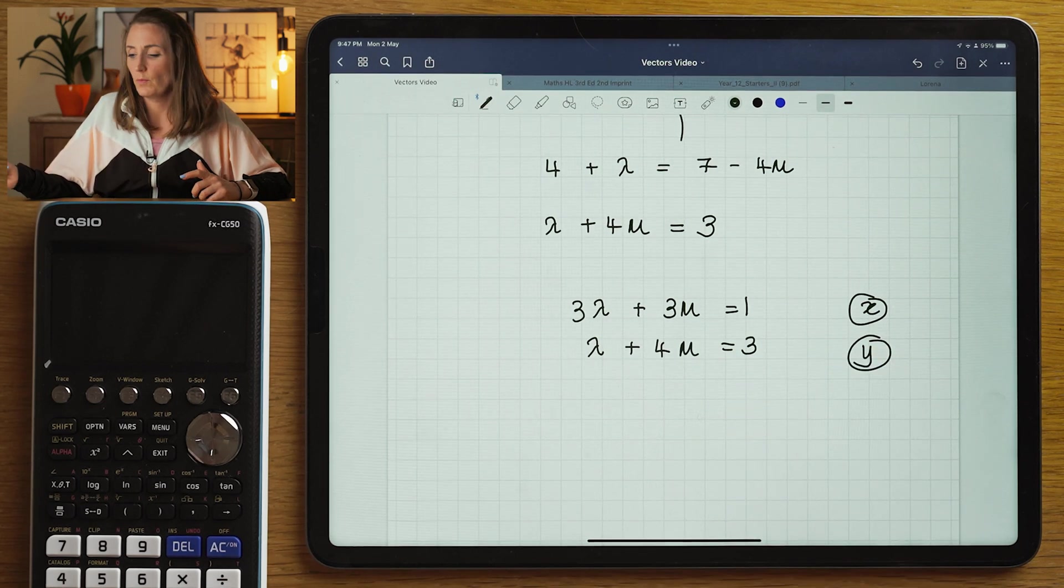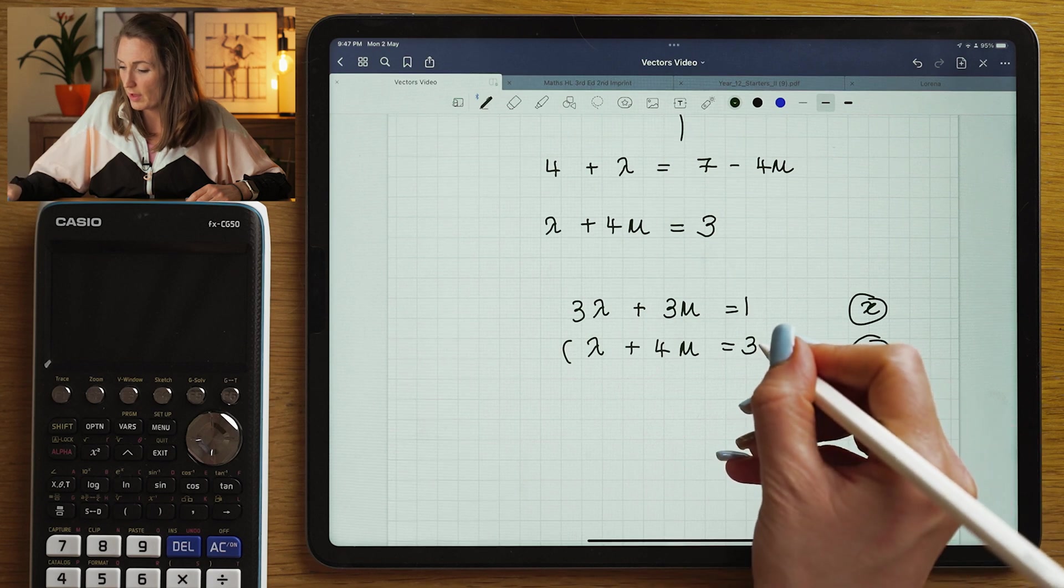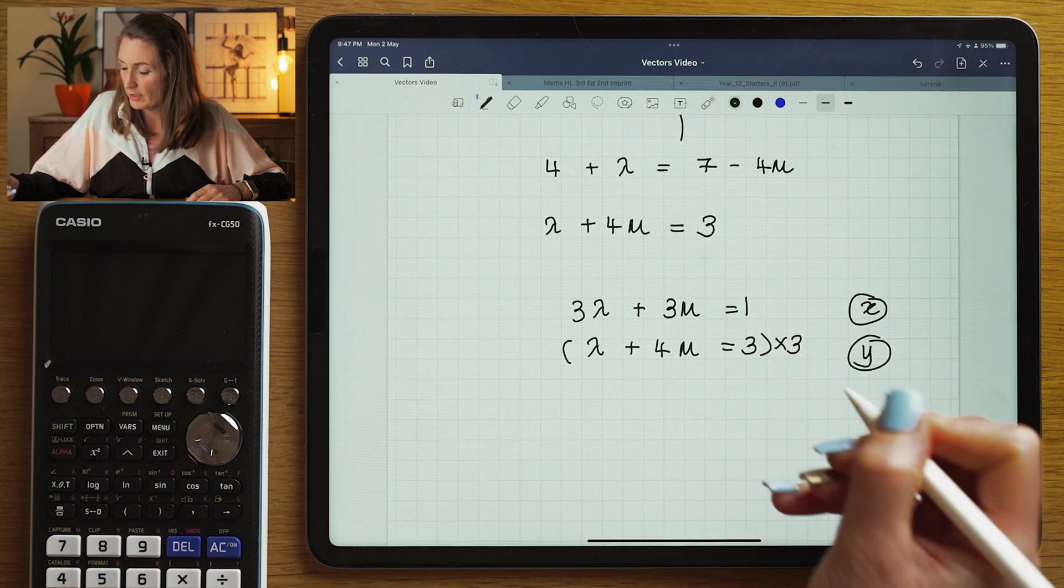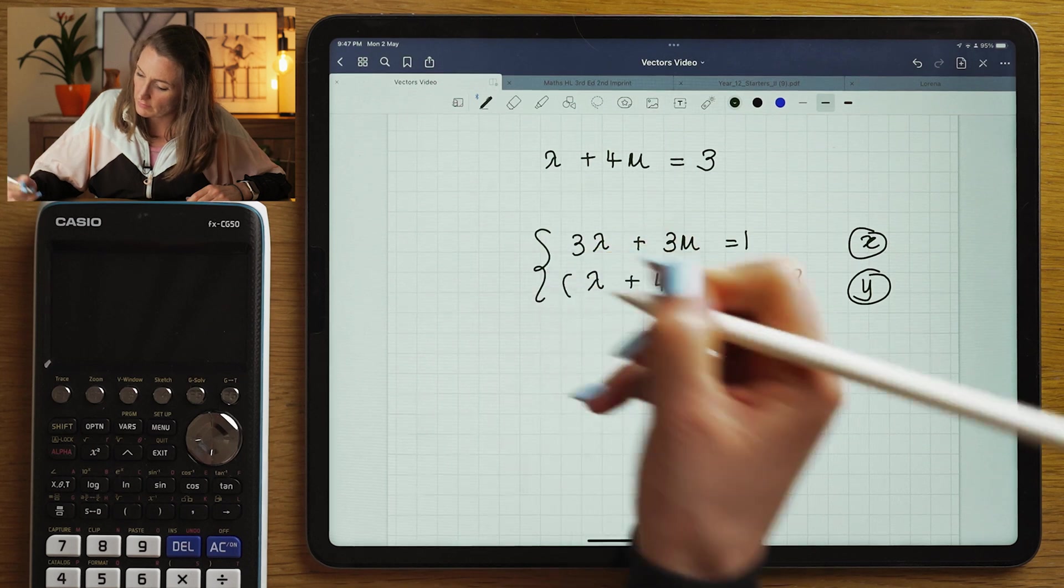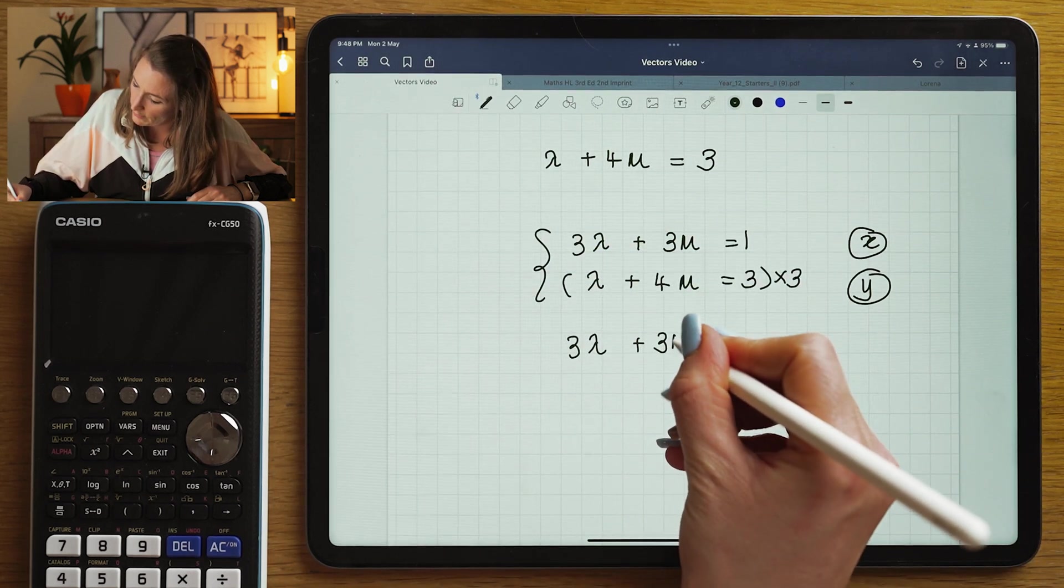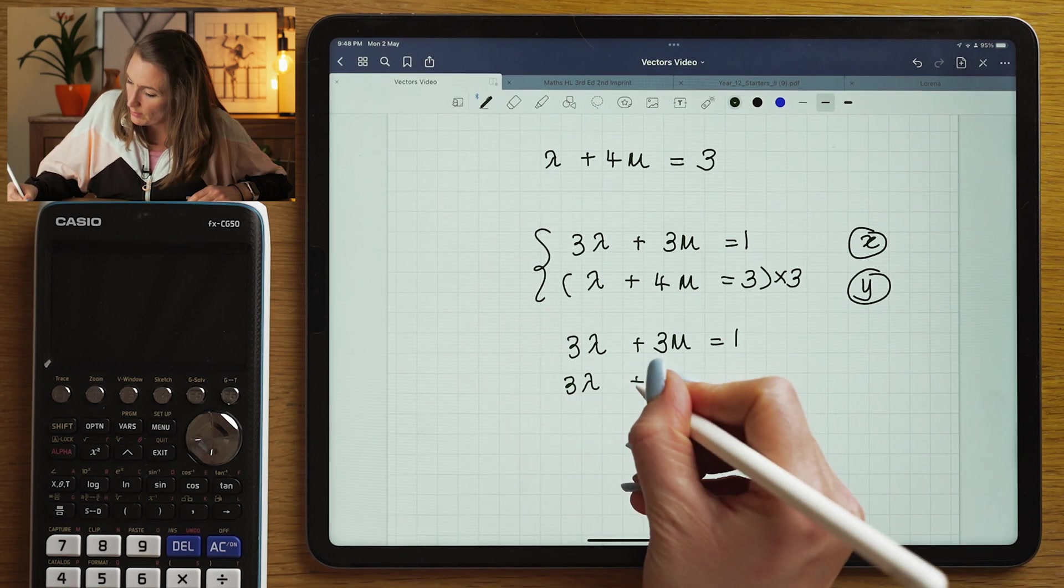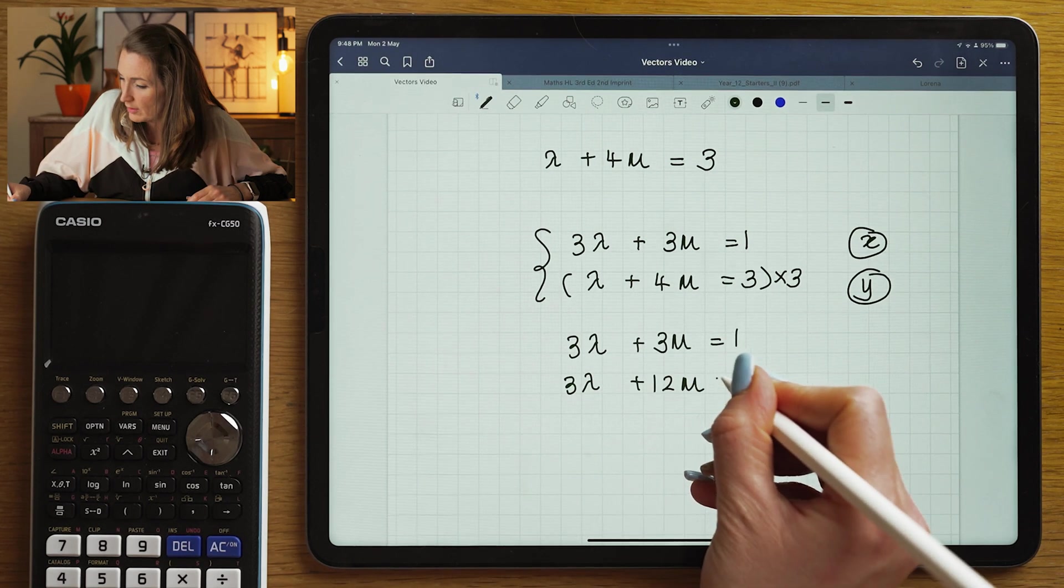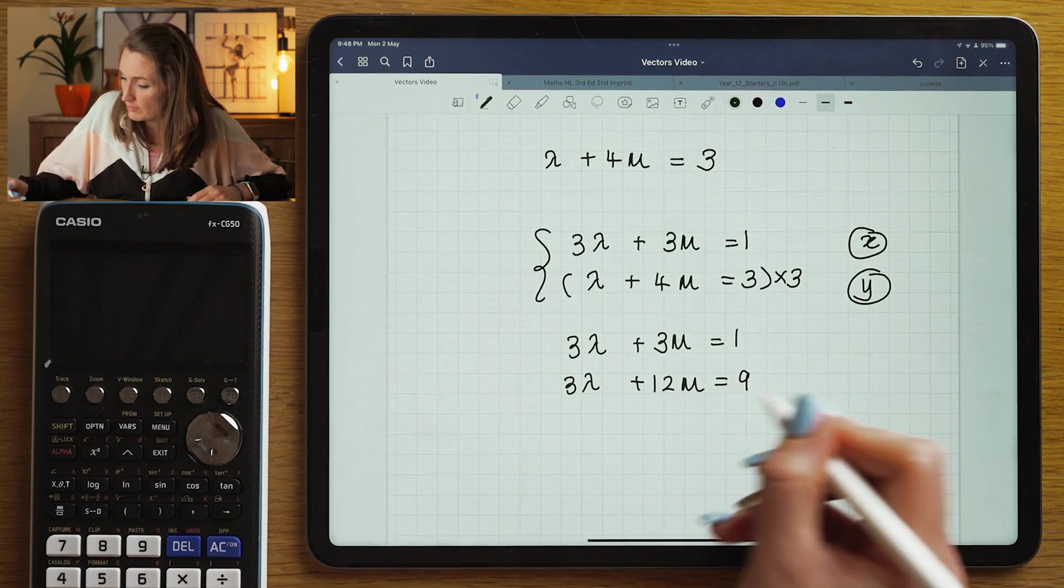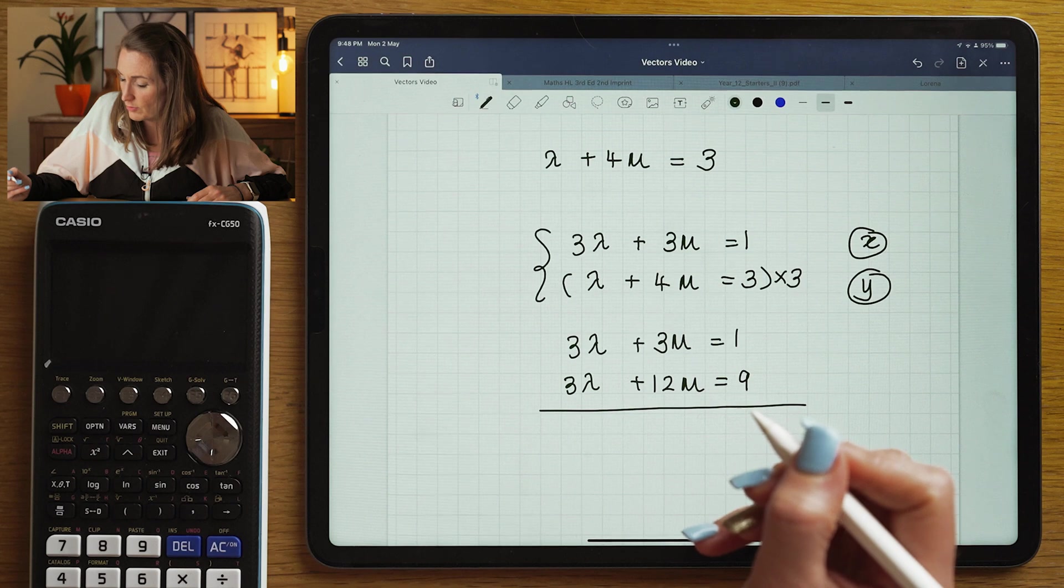Now I want to eliminate one of these variables. So I'm going to multiply this by, for example, 3. This is a simultaneous equation. So this would be 3 lambda plus 12 mu is equal to 3 times 3, which is 9. I'm going to subtract these equations.